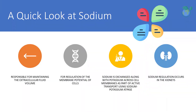Let's take a quick look at sodium, which is an important electrolyte. Sodium is a cation responsible for maintaining the extracellular fluid volume and for regulation of the membrane potential of cells. Sodium is exchanged along with potassium across cell membranes as part of active transport using sodium-potassium ATPase, and assists in electrical conductivity for neural transmission. Sodium regulation occurs in the kidneys, where it is excreted when in excess or retained where needed. Dietary intake and balance of sodium levels is maintained by homeostatic control, and sodium is additionally lost as perspiration through the skin during physical exertion.